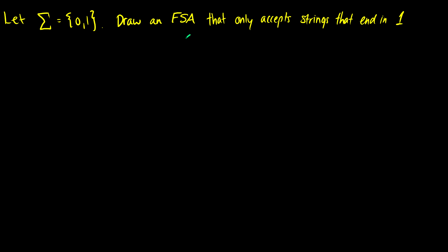In a regular language this might look like 0,1 star and then a 1. So our final state - let's start with a final state because we want to do strings that end in 1. Let's call this F. So if there's a 1 going to it, it's going to accept it.